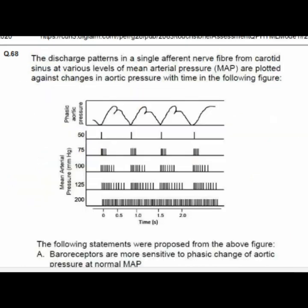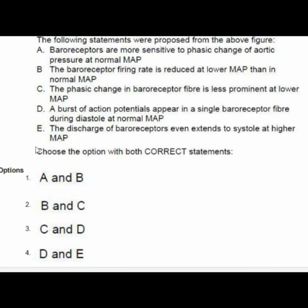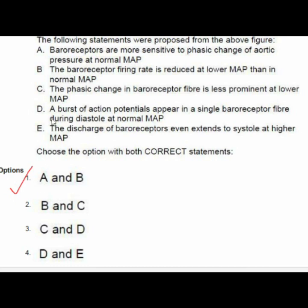Question 68: The discharge pattern in a single afferent nerve fiber from the carotid sinus at various levels of mean arterial pressure (MAP) are plotted against changes in aortic pressure. Option 1 — A and B — is correct: A — baroreceptors are more sensitive to phasic changes of aortic pressure at normal MAP; B — the baroreceptor firing rate is reduced at lower MAP than at normal MAP.